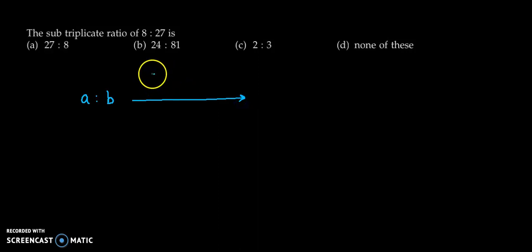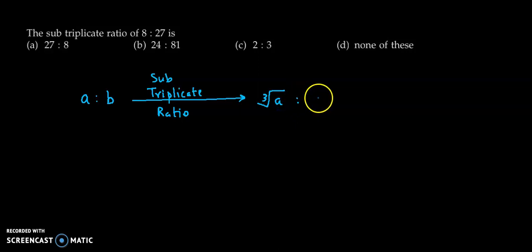The sub-triplicate ratio of 8 is to 27 is? If we have the given ratio as A is to B, then its sub-triplicate ratio is obtained as cube root of A is to cube root of B. So we have the given ratio as 8 is to 27.